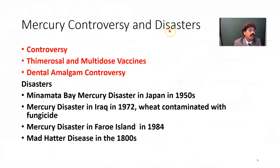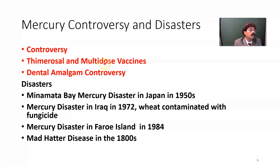Regarding mercury controversy: thimerosal is used in multi-dose vaccines as a preservative to protect the vaccine content, so one vial can be used to vaccinate multiple babies or persons. Some people say it may cause autism and increase autistic babies, but there is no concrete support for that claim.